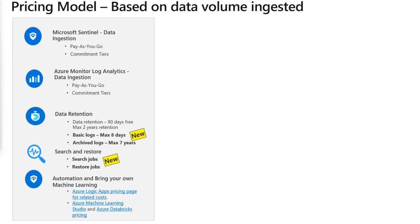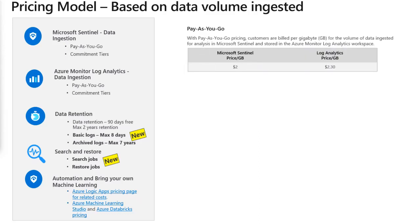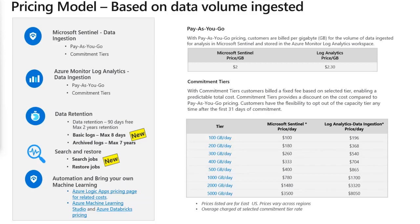If you are going to use the new search and restore features, then there will be a charge for those as well. Also, if your use cases require additional features such as machine learning, logic apps, or function apps, then those features will also attract a charge. For Microsoft Sentinel and log analytics ingestion pricing, we provide a choice between pay-as-you-go and commitment tiers. Commitment tiers offer significant discounts as well as better price predictability. We provide choices ranging between 100 gigabytes a day all the way up to 5 terabytes a day. Any usage above the commitment tier level, also known as overage, is billed at the same price per gigabyte for the current commitment tier.